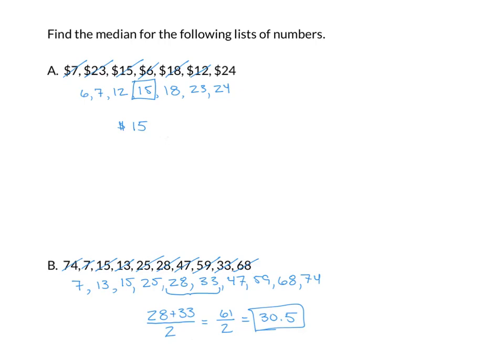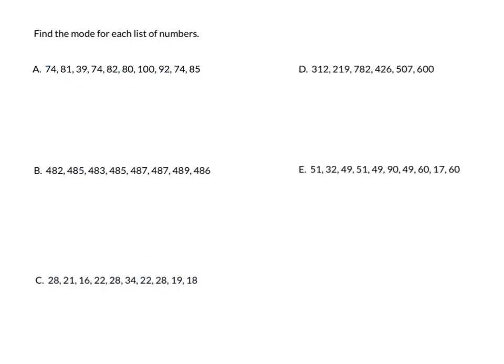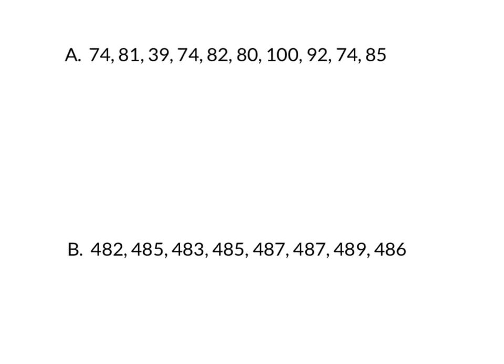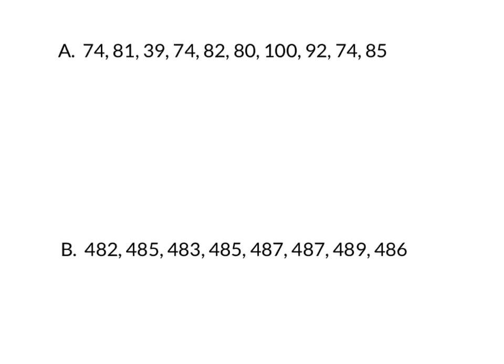Let's go ahead and look at our last one, which is mode. Recall that mode is the number that appears most often. Looking at example A, I see 74 appears three times, and the rest of them appear only once. So our mode is 74.